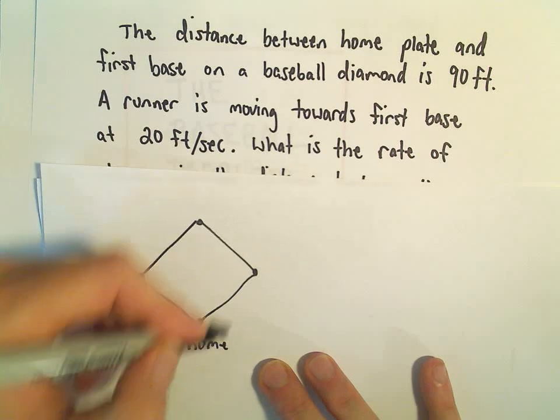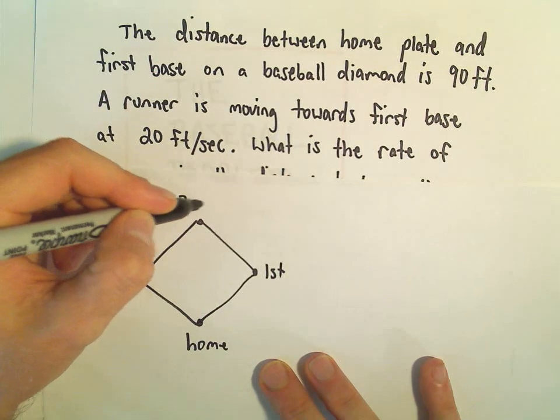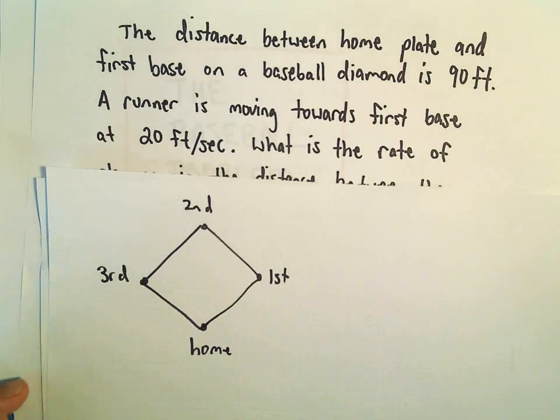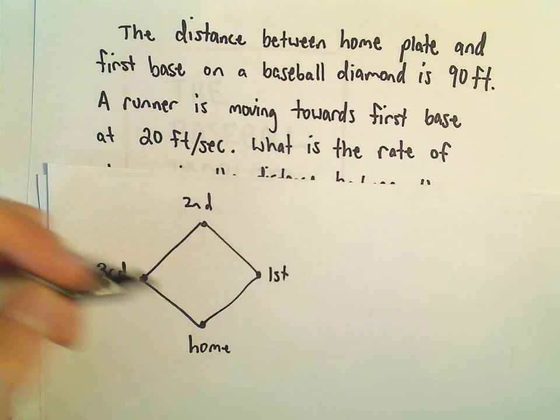So there's home, first base, second base. I think probably most people are familiar with a baseball diamond. So each one of these lengths are 90 feet.